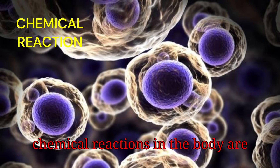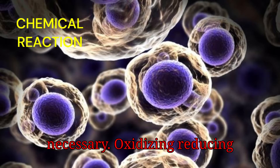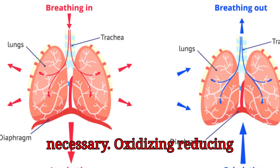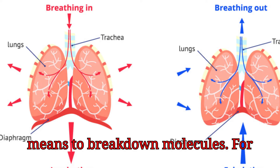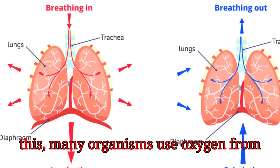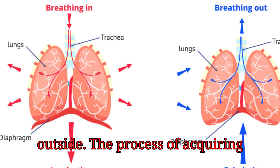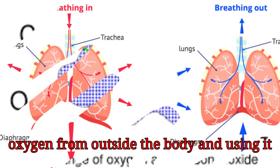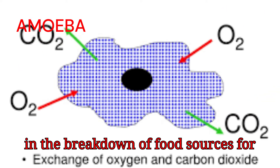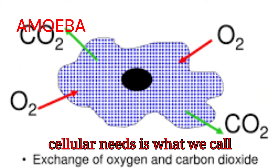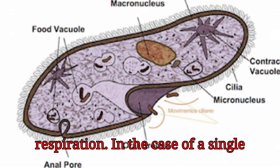This uniform energy can be used for the various molecular movements needed for maintaining living structures and body growth. For this, a series of chemical reactions in the body are necessary. Oxidizing and reducing reactions are the most common chemical means to break down molecules. For this, many organisms use oxygen from outside. The process of acquiring oxygen from outside the body and using it in the breakdown of food sources for cellular needs is what we call respiration.